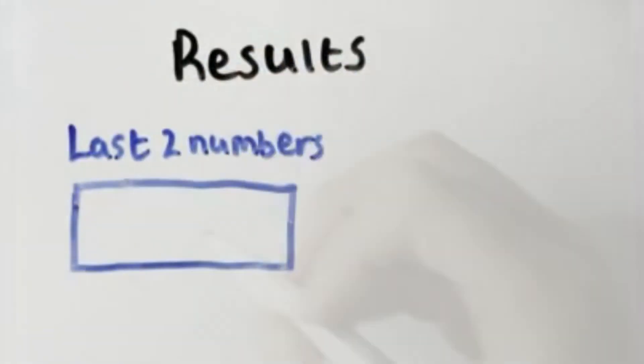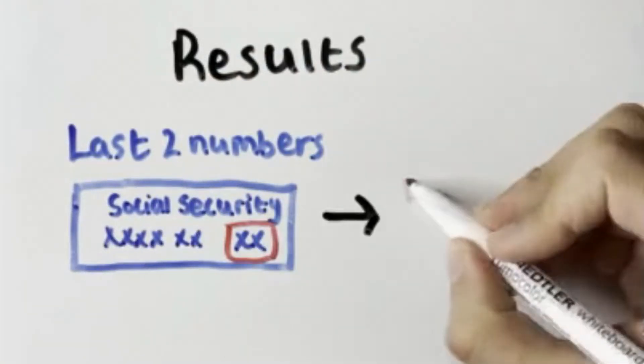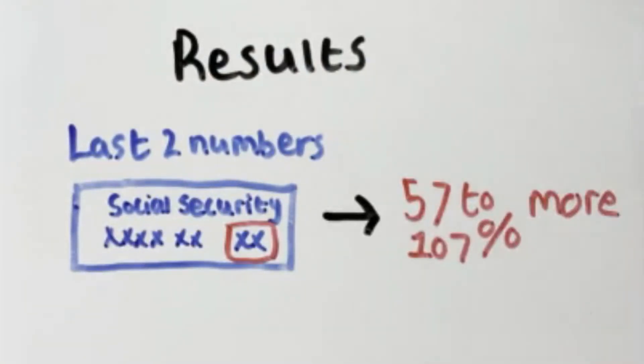Astonishingly, students that had above median social security numbers were willing to pay 57-107% more for each of the products than students with below median social security numbers.